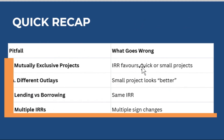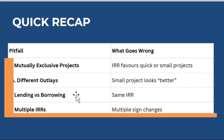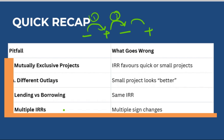These are the common pitfalls of using IRR: mutually exclusive projects where IRR favors quick payback; different outlays where it prefers smaller projects; lending versus borrowing where it gives the same positive percentage regardless of direction; and multiple IRRs when cash flow signs change multiple times — for example, minus, plus, minus, plus would give three IRRs.